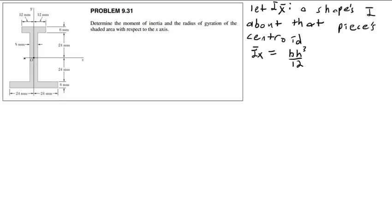We want to find the moment of inertia about I_x, and we're going to do that using a table. I'm going to set up a table with a piece number column. I'll have pieces one, two, and three, with the boundaries here and here.